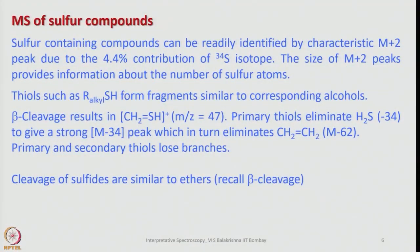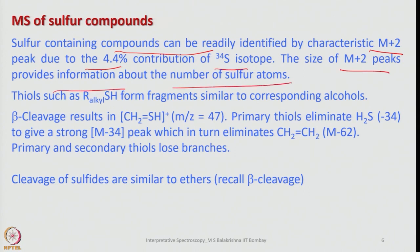Now let us look into mass spectra of sulphur compounds. Sulphur-containing compounds can be readily identified by characteristic M+2 peaks due to the presence of 4.4% of the ³⁴S isotope. The size of the M+2 peak provides information about the number of sulphur atoms. This is one advantage with sulphur — we invariably see M+2 characteristic peaks.